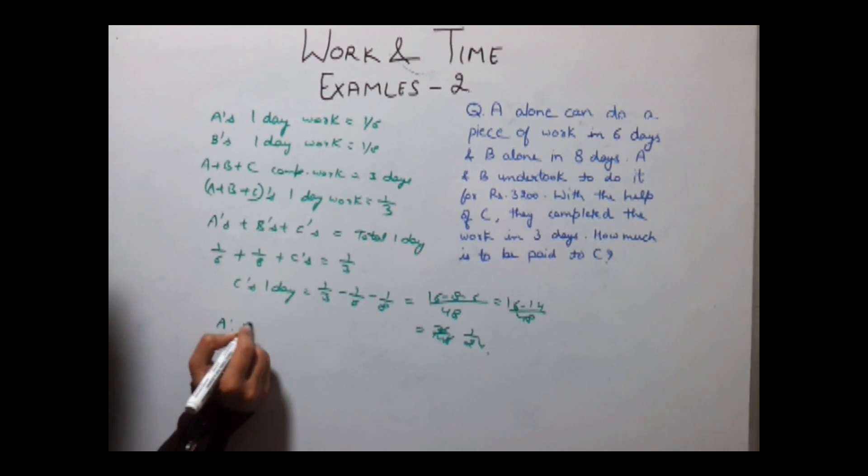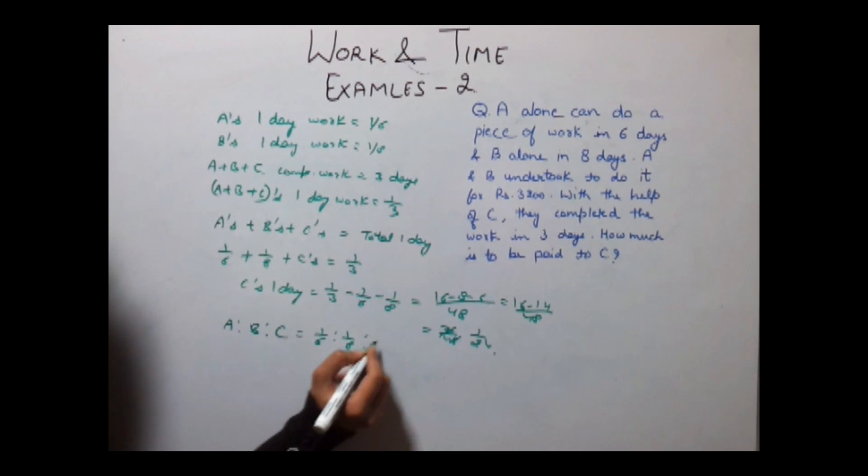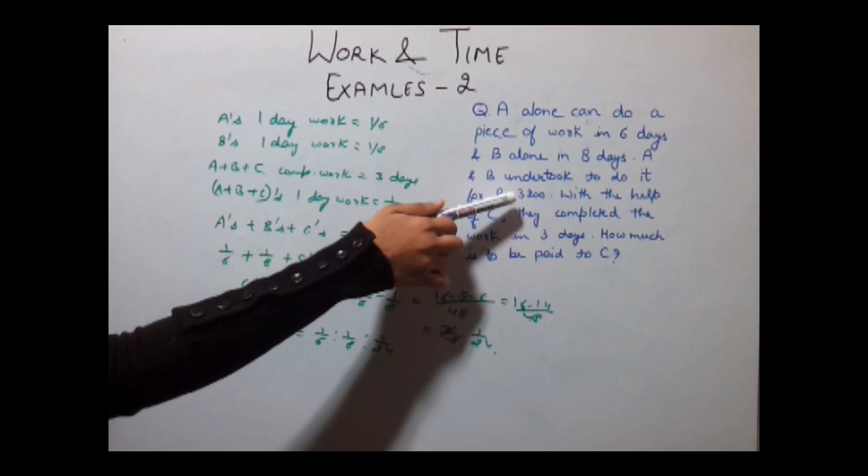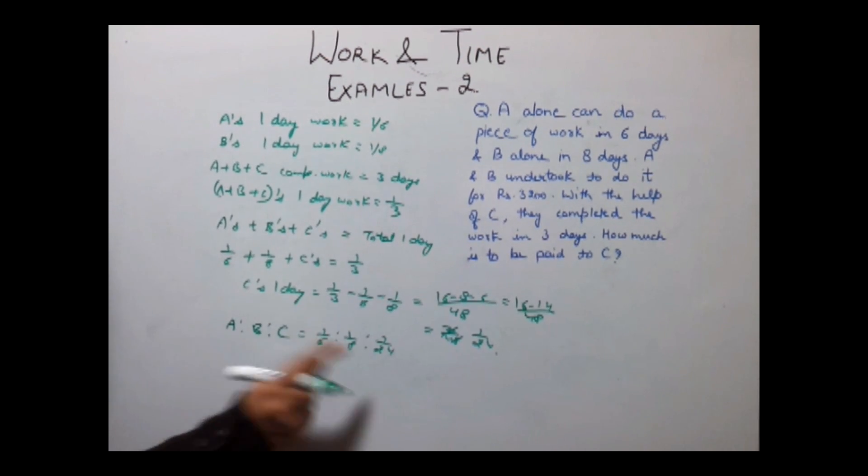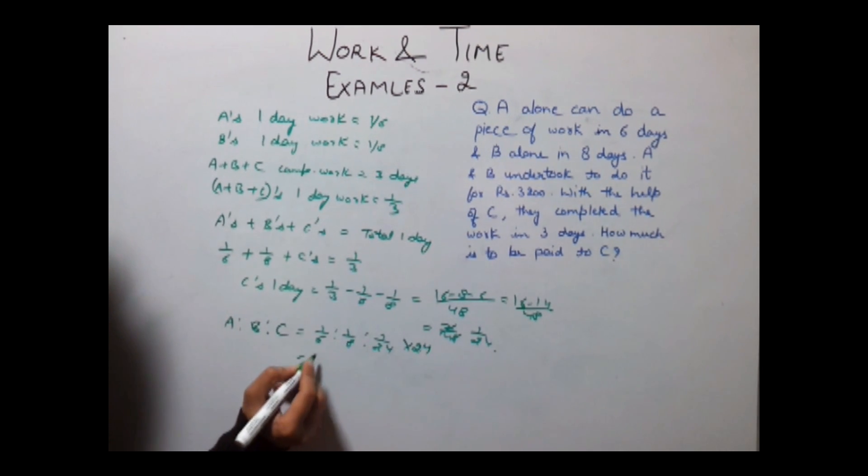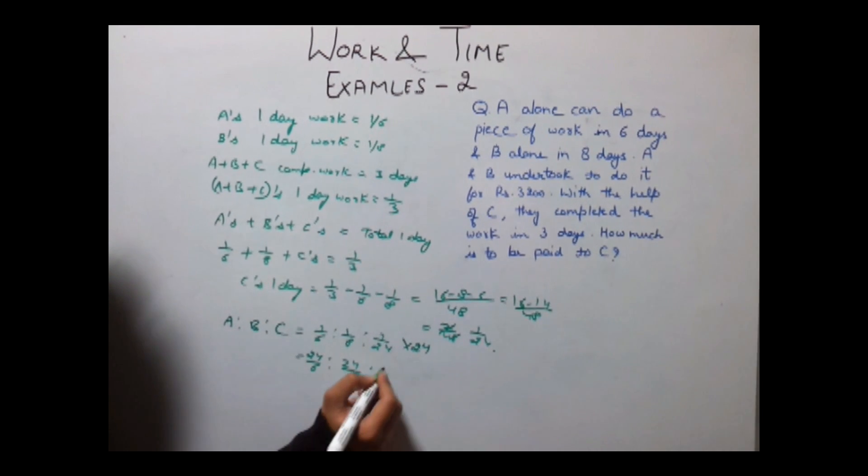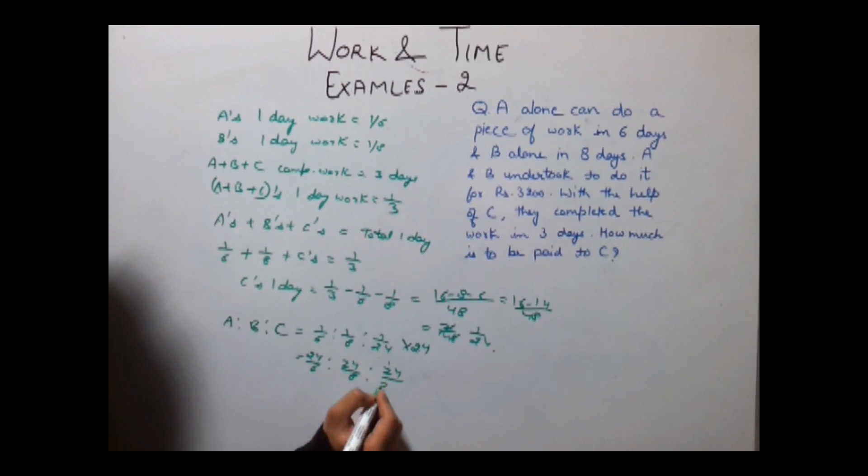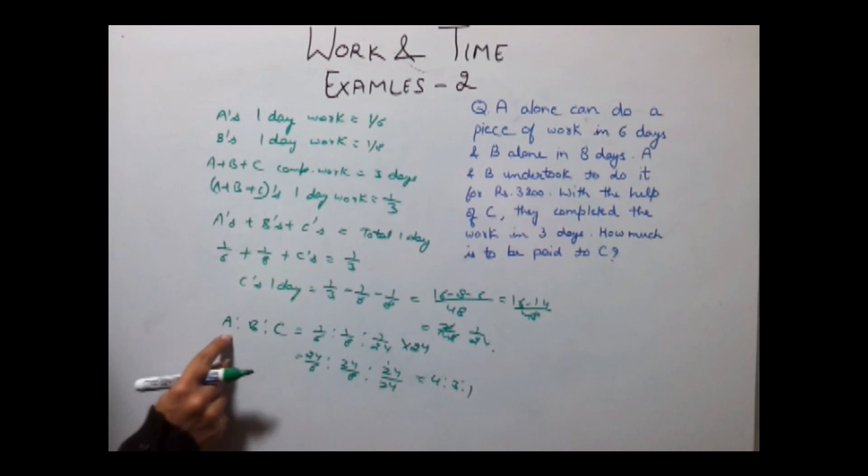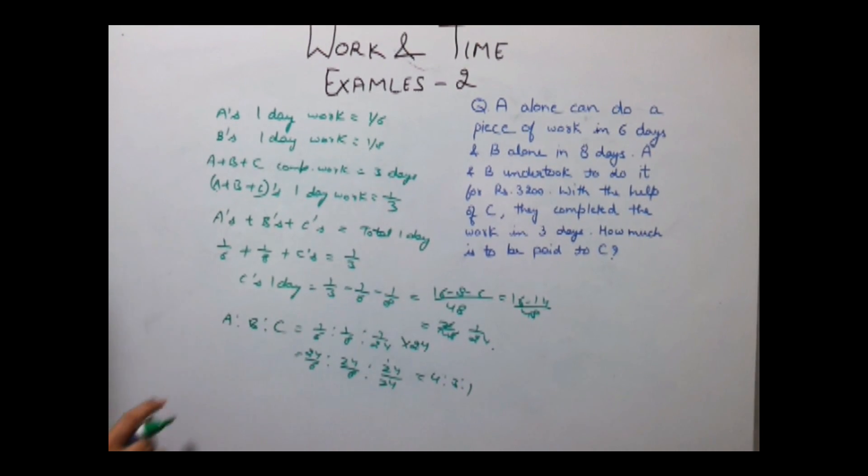Their ratio becomes A ratio B ratio C equal to 1/6 ratio 1/8 ratio 1/24. We have taken this ratio because the amount that is paid to them will depend on their efficiency. Multiplying this ratio by 24 we get 24/6 ratio 24/8 ratio 24/24 that is equal to 4 ratio 3 ratio 1. So they will get this 3200 in ratio of 4 ratio 3 ratio 1.